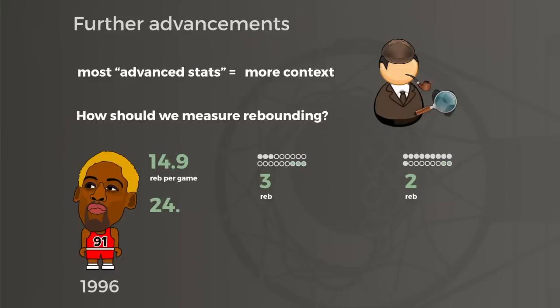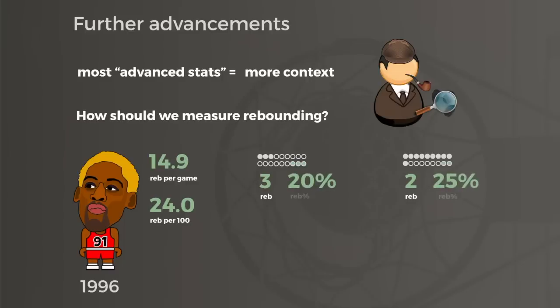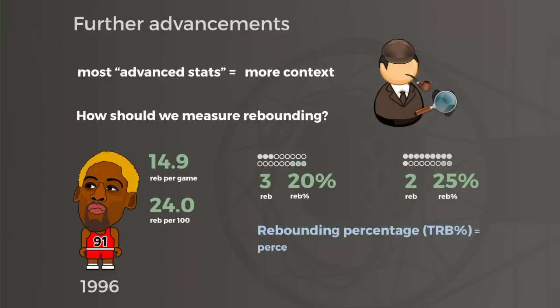We could look at rebounds per 100 possessions, but that doesn't factor in how often teams are missing shots — it doesn't take into account how many rebounds are available to grab. This thought gave birth to rebounding percentages or rebounding rates, which is the percentage of available rebounds a player grabs while he's in the game. This creates a more even playing field to compare rebounding in games with 50 misses versus 100 misses.